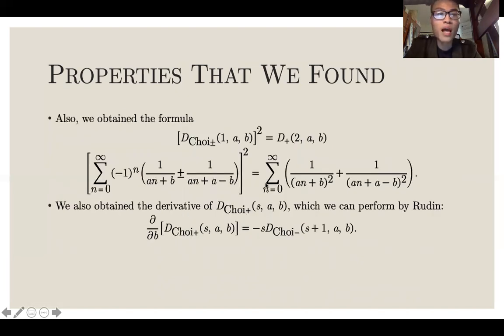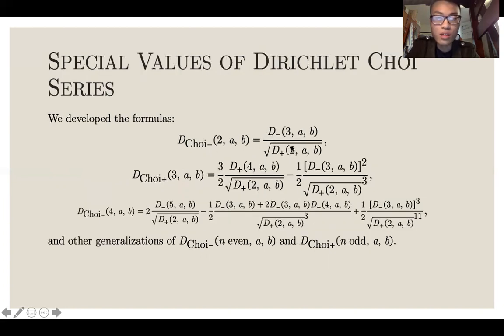We also obtained a formula that D-Choi plus minus of 1ab all squared is D plus 2ab. We also obtained the derivative of D-Choi plus of sab. If you take the derivative with respect to b, you get negative s D-Choi minus of s plus 1ab. This is a remarkable result, because now we can take the derivative of this expression and we get this. So now we have a formula for any value of a and b for D-Choi minus of 2ab.